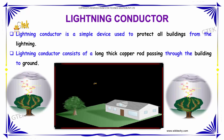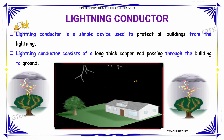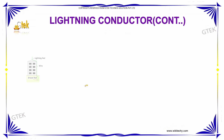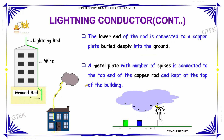The lightning conductor consists of a long thick copper rod passing through the building to the ground. The lower end of the rod is connected to a copper plate buried deeply into the ground. A metal plate with a number of spikes is connected to the top end of the copper rod and is kept at the top of the building.